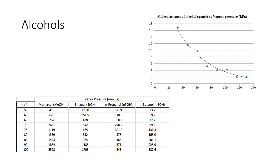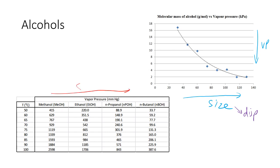Looking at the data: as molecular size increases, vapor pressure goes down, because increased dispersion forces hold the molecules together and prevent evaporation. On the temperature graph, methanol has higher vapor pressure than ethanol, and as size increases vapor pressure decreases — consistent with what we said. As temperature increases, vapor pressure increases because more particles have enough energy to evaporate. That's it for alcohols — see you in the next video.